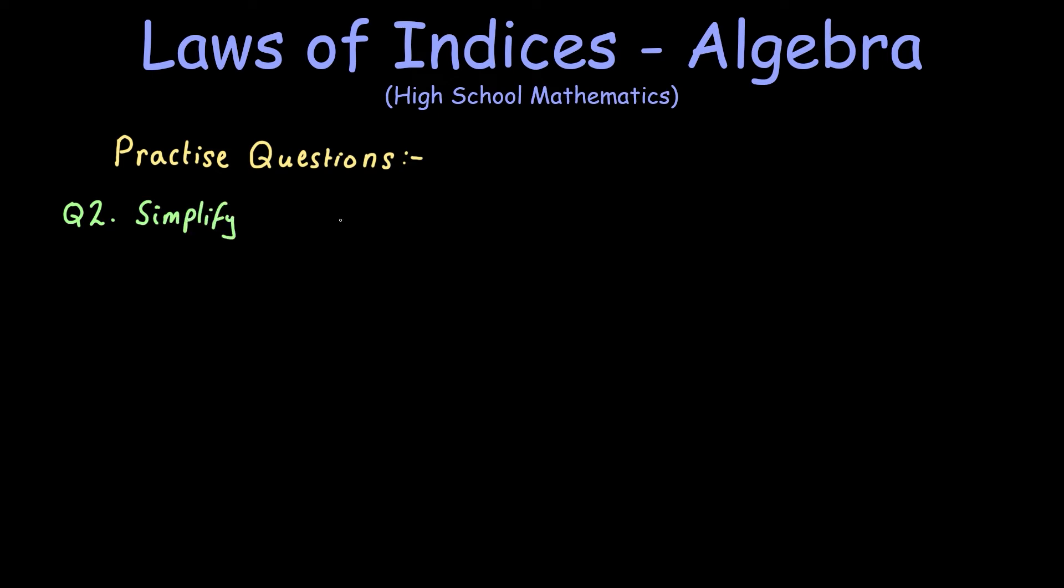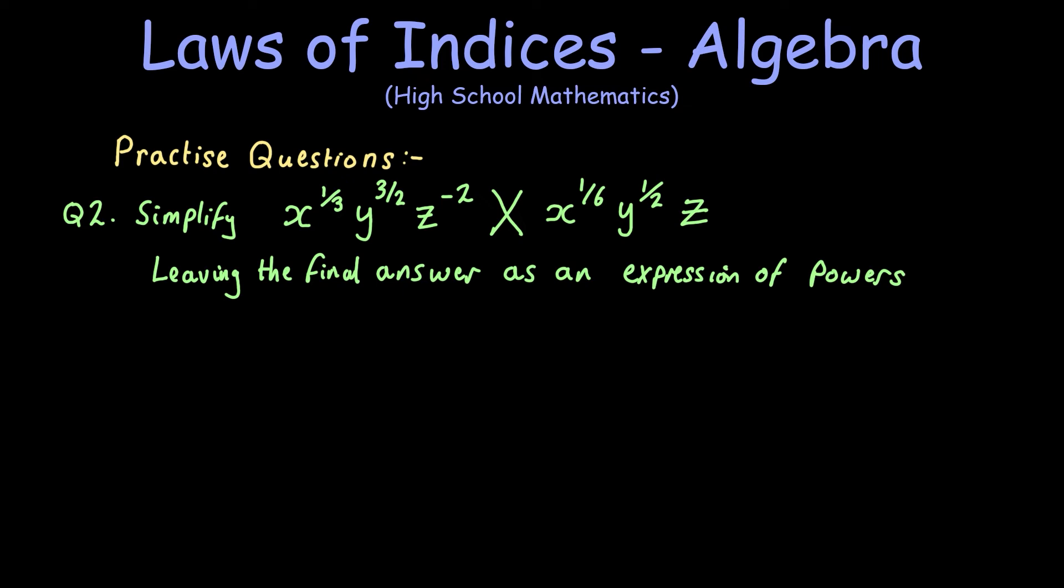The next one is a bit more complicated because we've got indices with fractional powers. So in this one, we want to leave the final answer as an expression of powers. Again with this example, we need to group the bases together in alphabetical order.